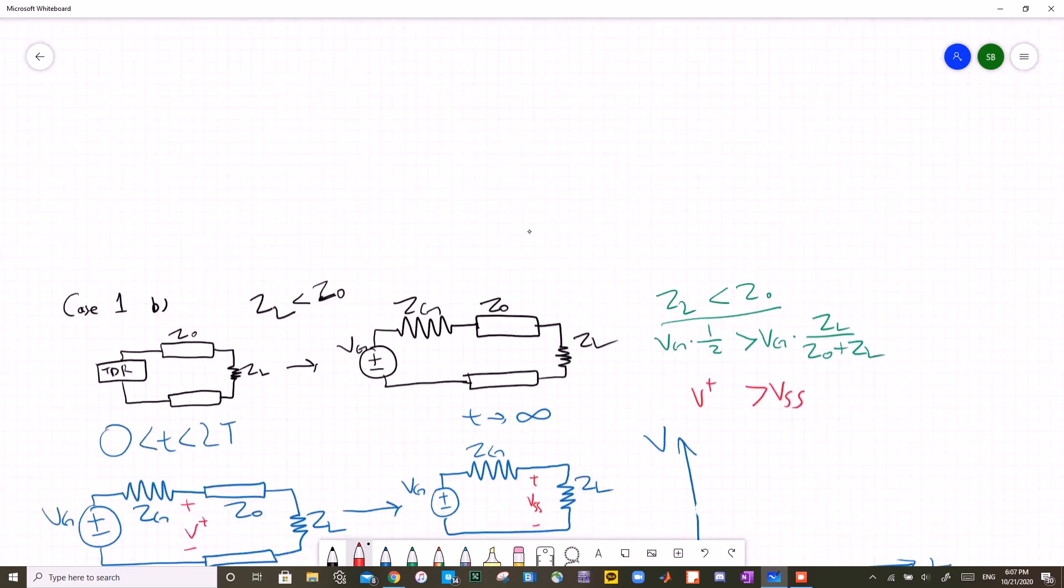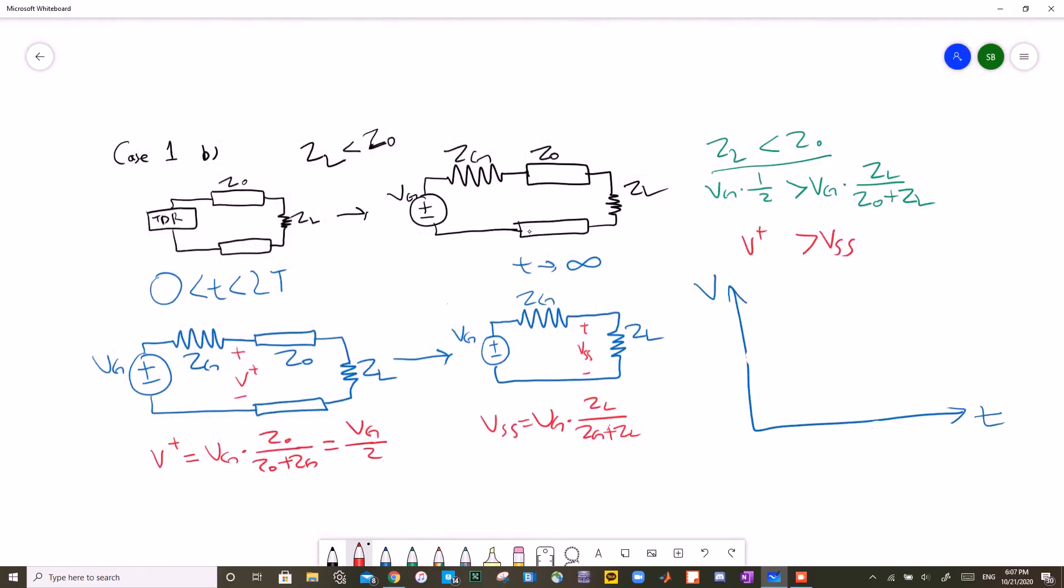Now let's take a look at case 1B. It is the same circuit, but now the initial condition is different. Now Z0 is bigger than ZL. You might think this doesn't change much, but it does change something. First of all, it doesn't change any of the circuits, right? The orientations are still the same, and the equations for the voltages are also still the same. The incident voltage is still VG over 2, and the steady state voltage is still VG times ZL over ZG plus ZL. What does change, however, is the initial condition that Z0 is bigger than ZL.